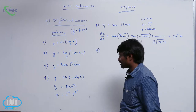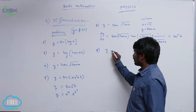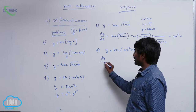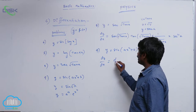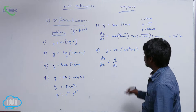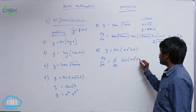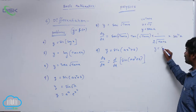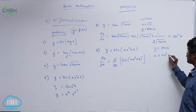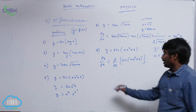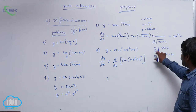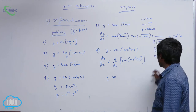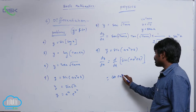The ninth problem is y is equal to sin of ax squared plus b. So dy by dx is equal to d by dx of sin of ax squared plus b. Taking y equal to sin u and u equal to ax squared plus b. First, differentiation of y with respect to u: sin u with respect to u is cos u, but u is equal to ax squared plus b.